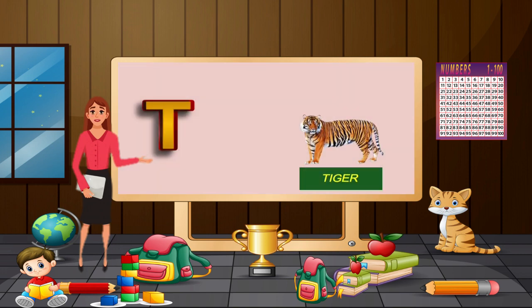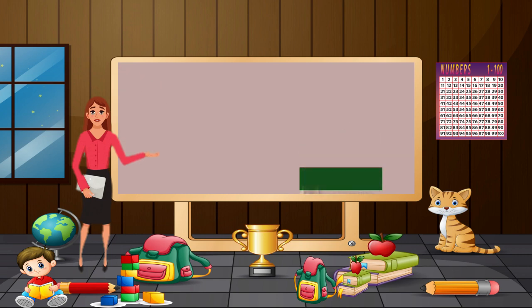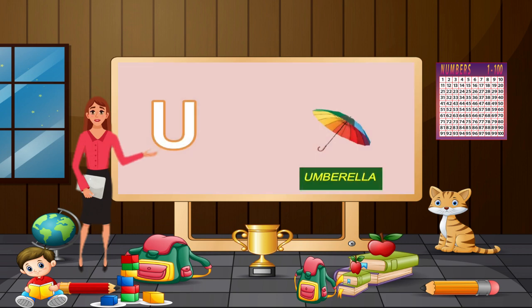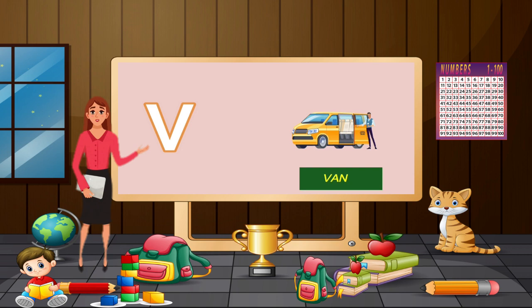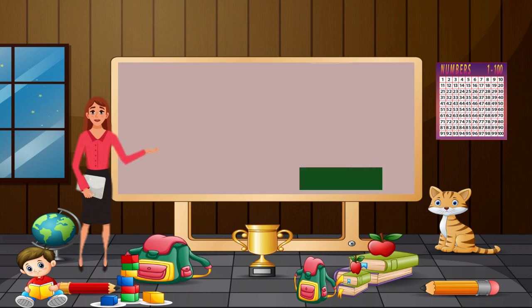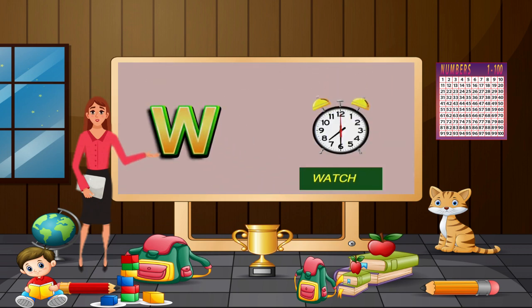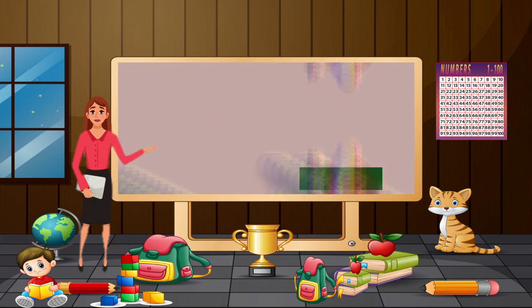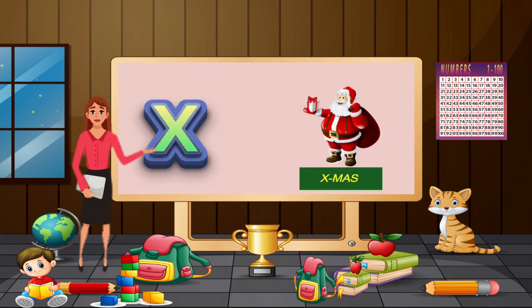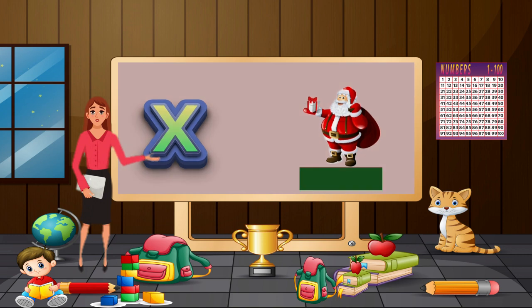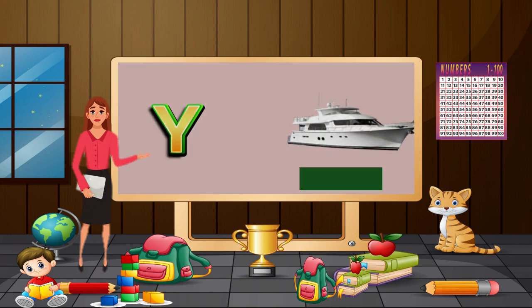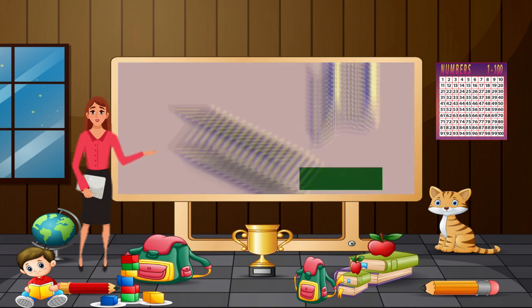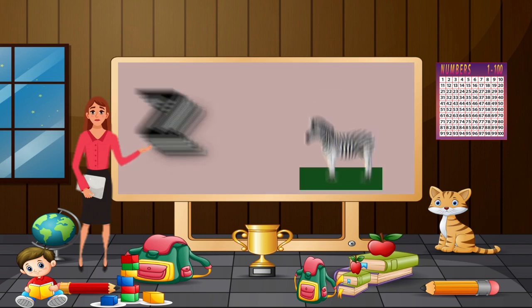S for sun, T for tiger, U for umbrella, V for van, W for watch, X for Christmas, Y for yacht, Z for zebra.